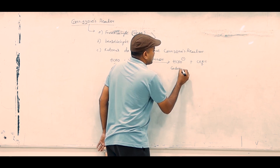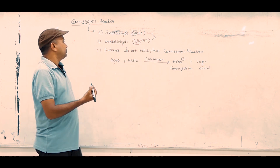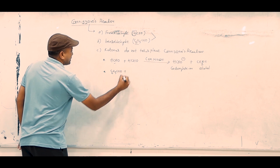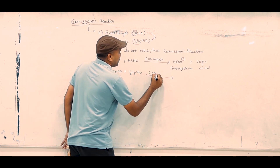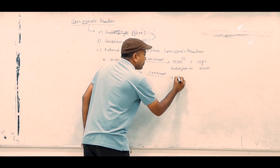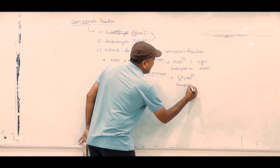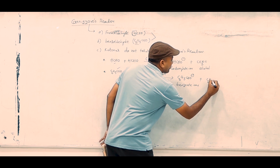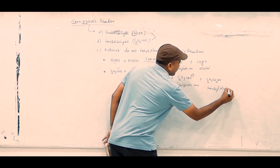Another example: two molecules of benzaldehyde (C6H5CHO) in the presence of concentrated alkali. The first aldehyde is oxidized to a carboxylate ion — that is, the benzoate ion. The other one is reduced to an alcohol — that is, benzyl alcohol.